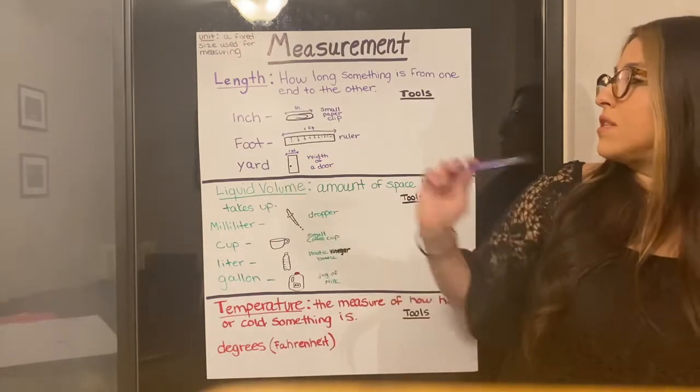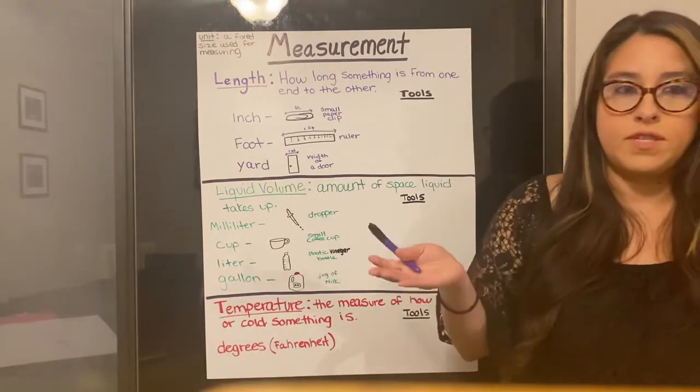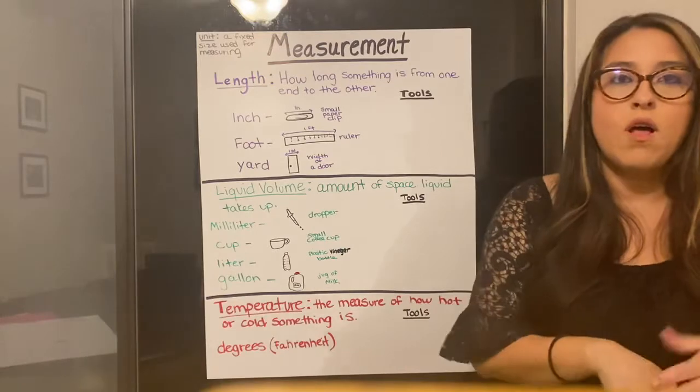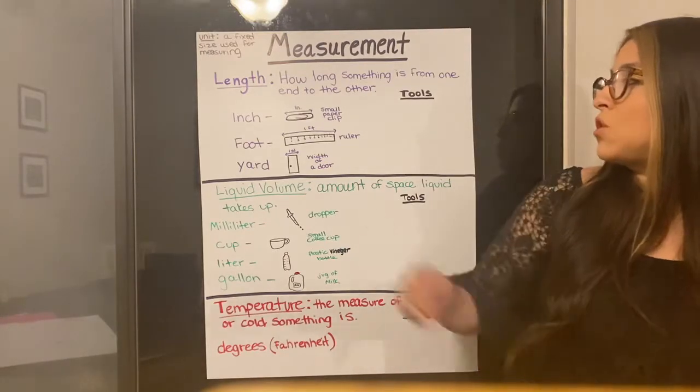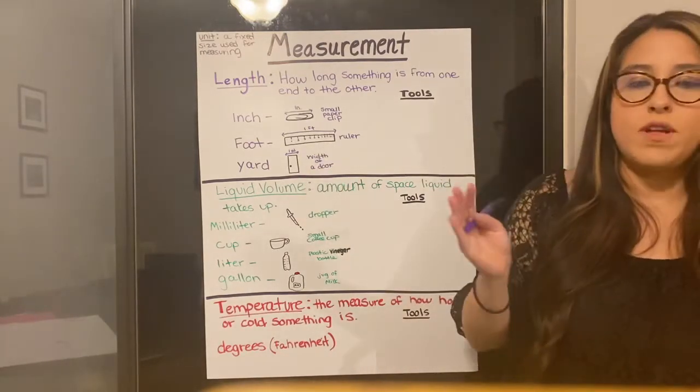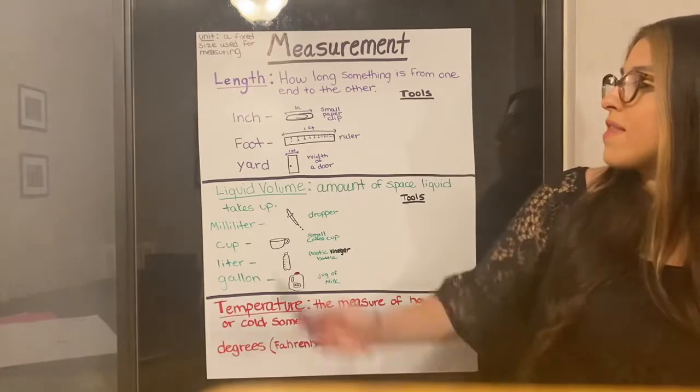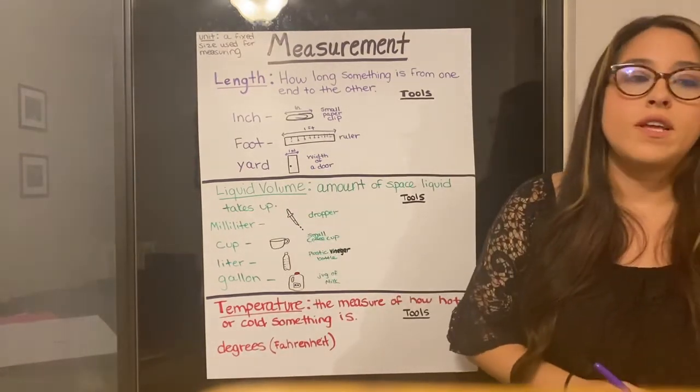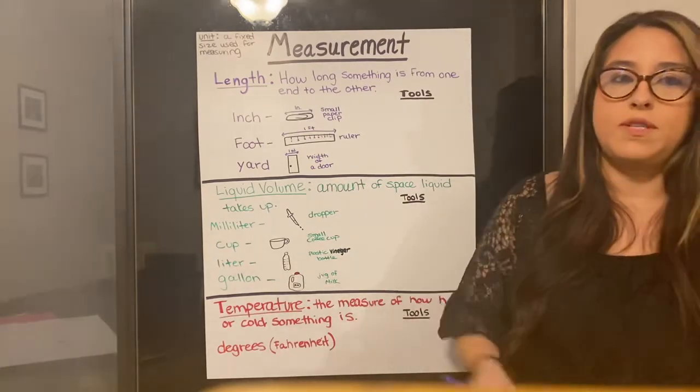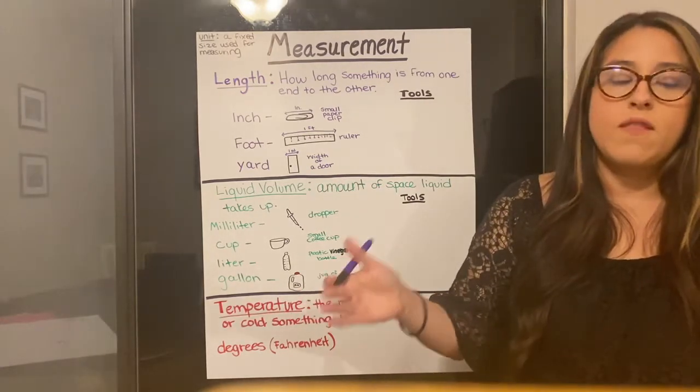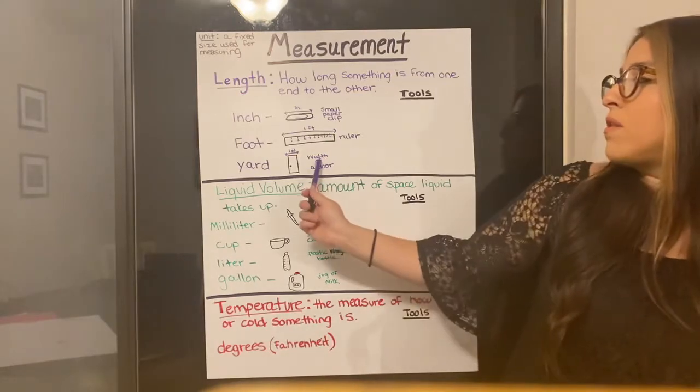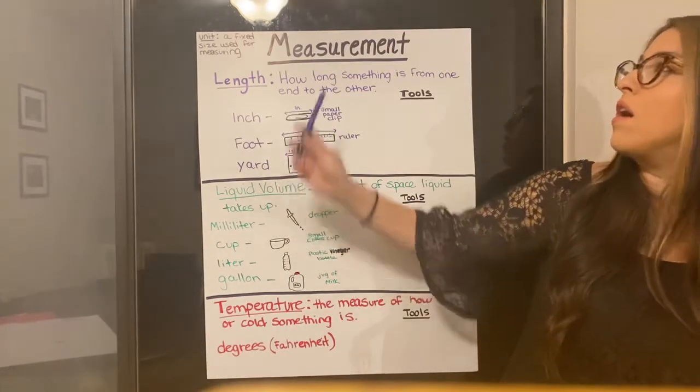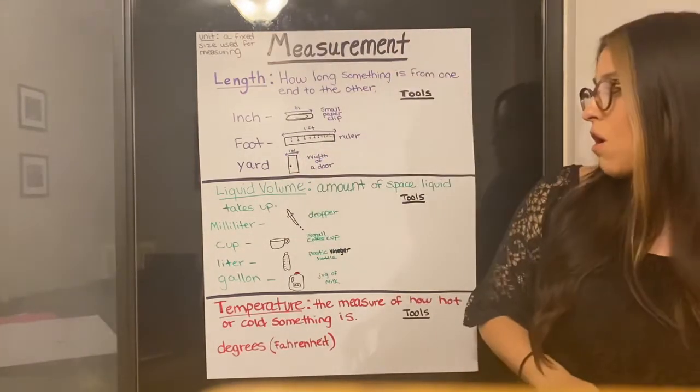And then we have a foot. A foot is the size of your standard ruler. The rulers that you guys all have, 12 inches is a foot. So a foot is one ruler. And then next we have a yard. A yard is three rulers put together. Three feet put together is a yard, and it's about the width of a door frame.